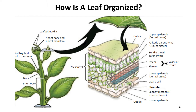The dermal tissue system consists of an upper and lower epidermis. The ground tissue system that lies between the epidermal layers of the leaf is known as mesophyll tissue, and it is always differentiated into two types: palisade parenchyma on the adaxial (upper) surface, and spongy parenchyma on the abaxial (lower) side. Vascular tissue consists of the complex tissues xylem and phloem.